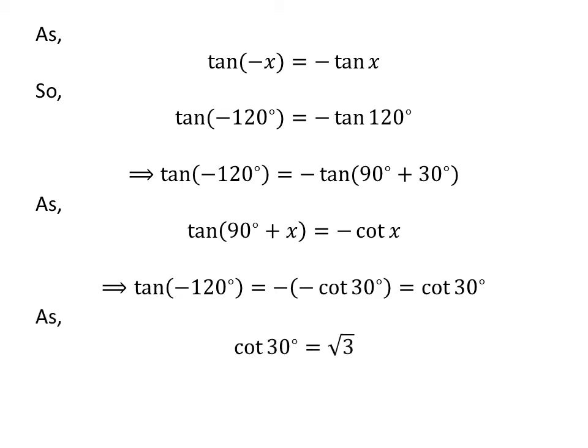We know the value of cotangent of 30 degrees is equal to square root of 3. So, we get the value of tangent of minus 120 degrees is equal to square root of 3.